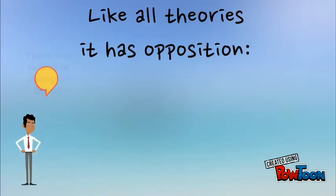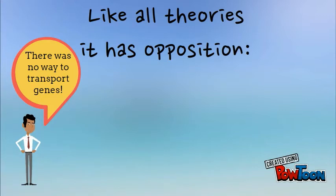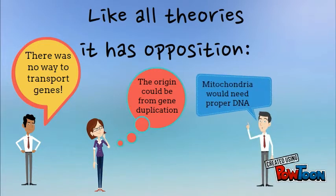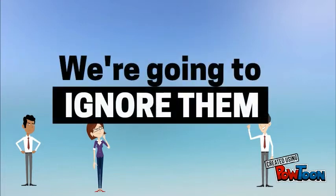First, let's acknowledge some oppositions as to why some people refute this hypothesis. One, there was no viable mechanism for the transfer of genes from the mitochondrion to the nucleus. Two, the origin of eukaryotes may have been the product of gene duplication. And lastly, mitochondria would have had to have genetic code that worked with the host cell in order to not cause mayhem. That's as far as we're going to explain.